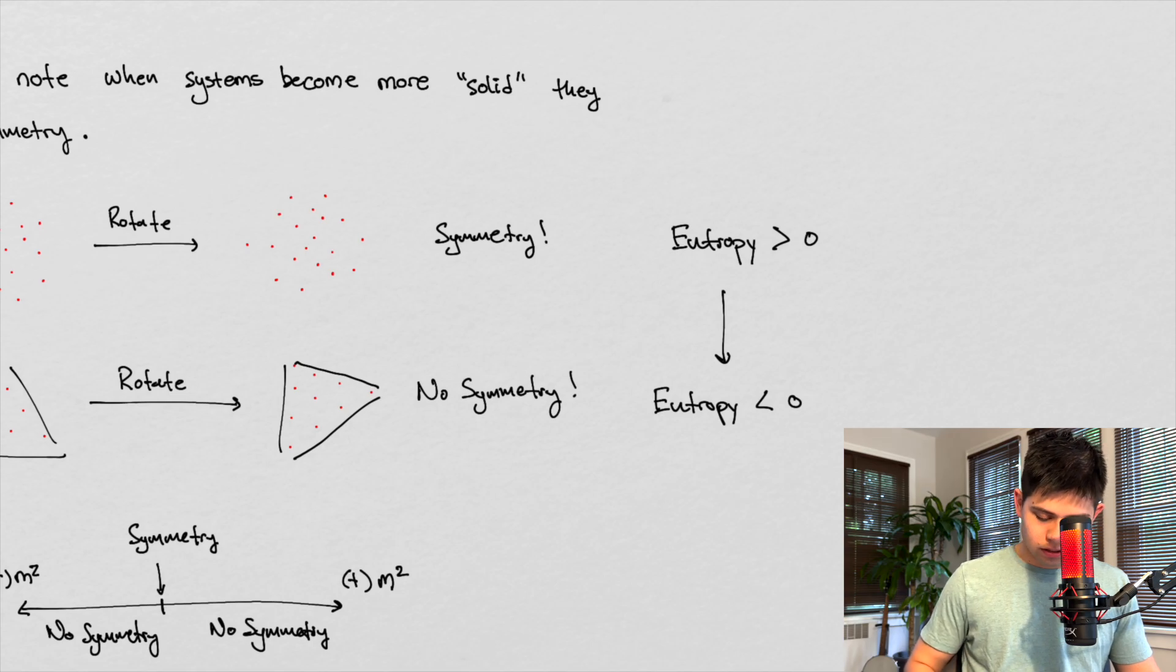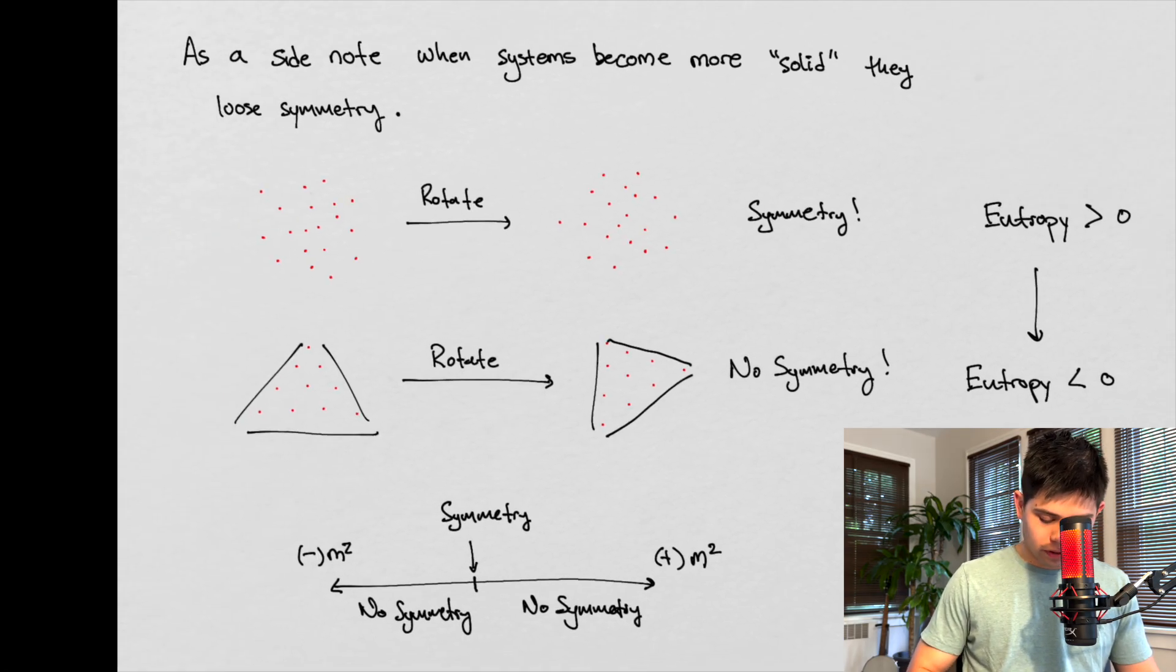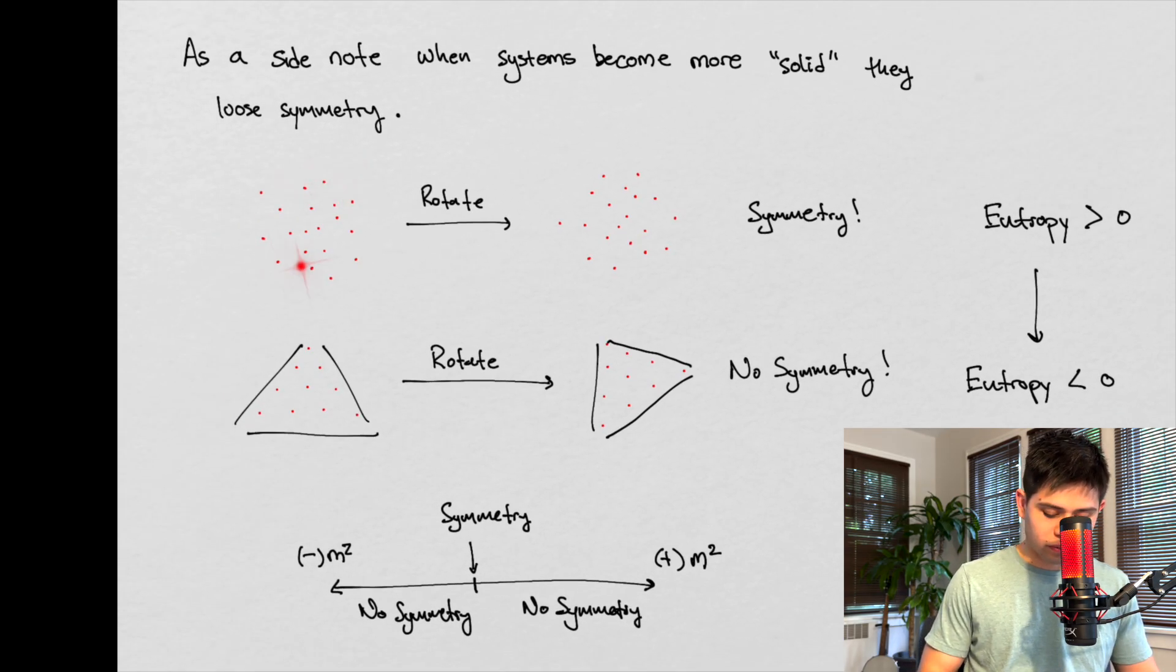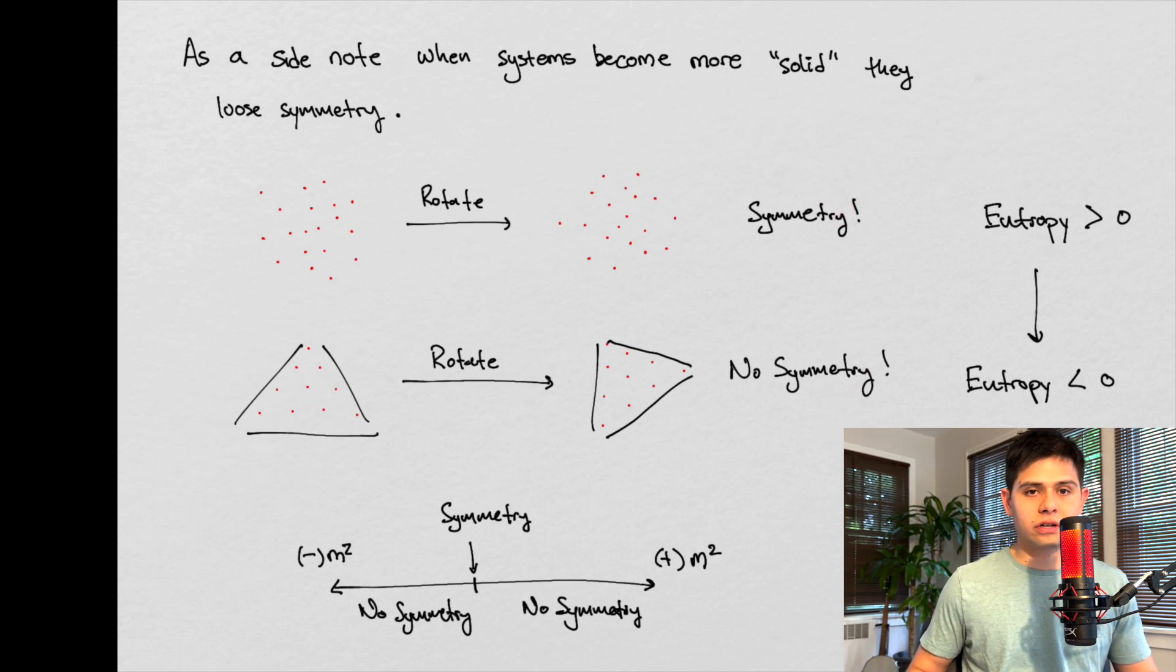And we go from, so when we go from gas to solid, we're losing symmetry. Right? This is kind of an interesting thing to think about. And this is something that the book also talks about as well.